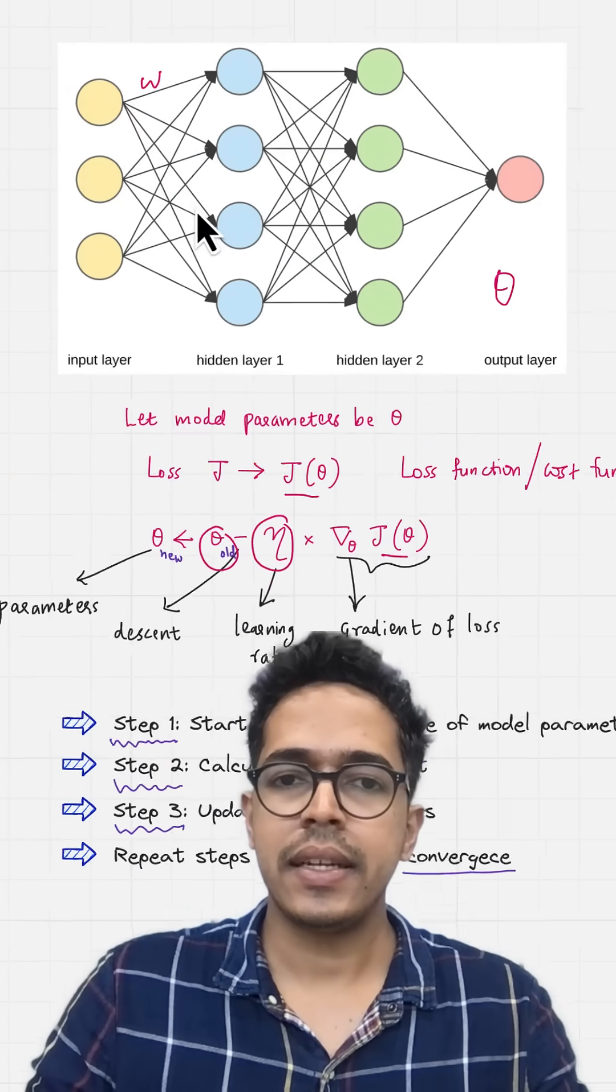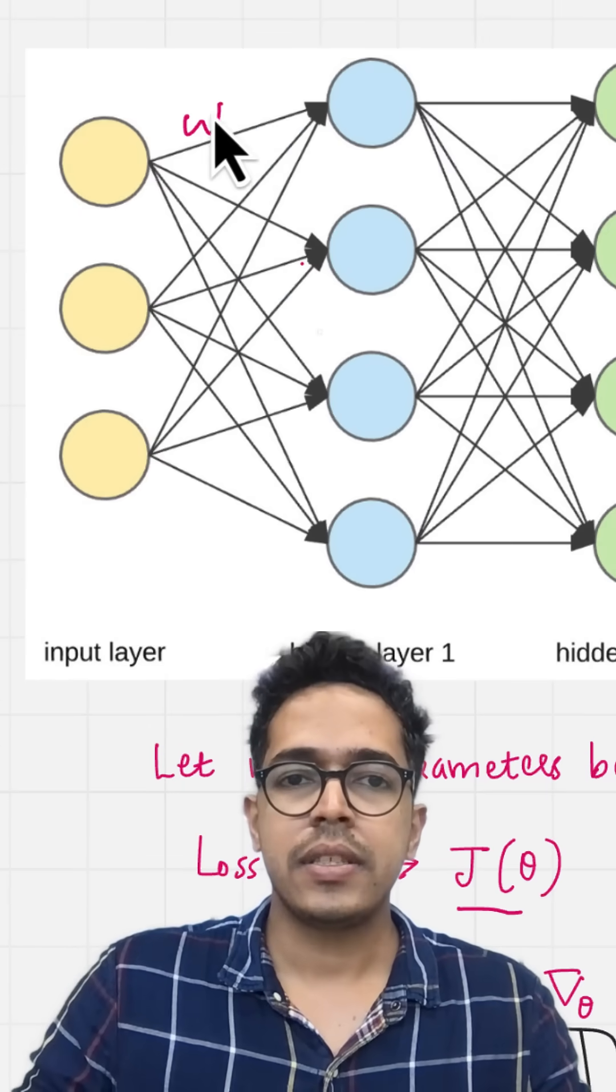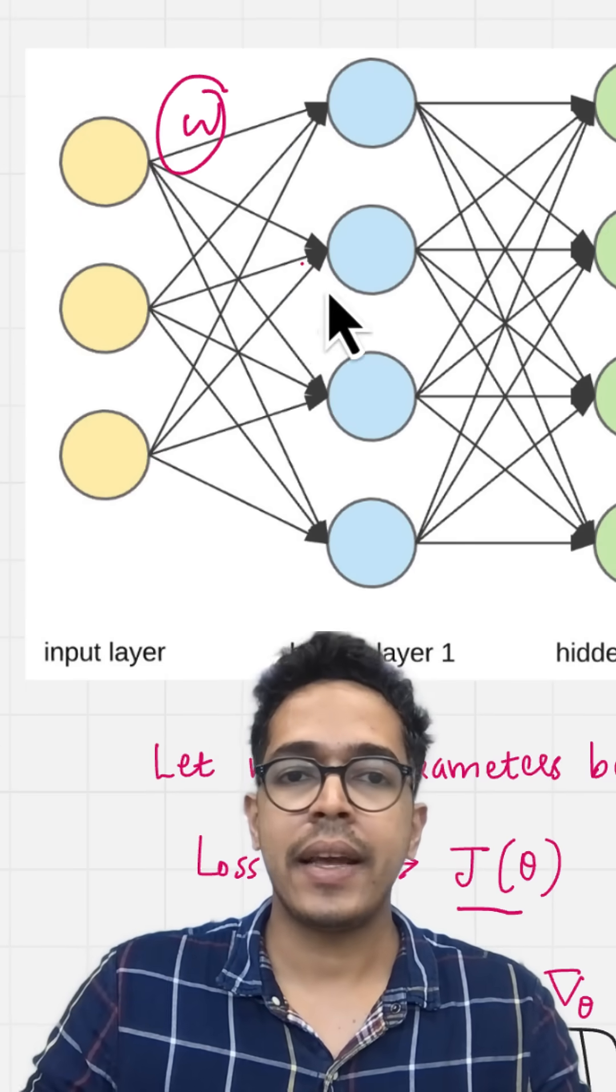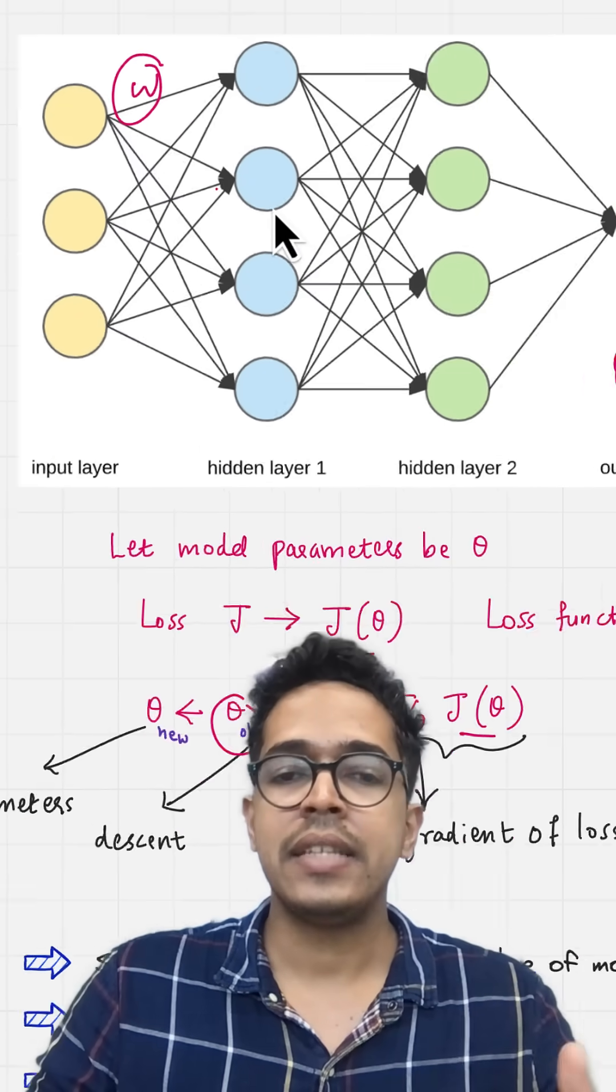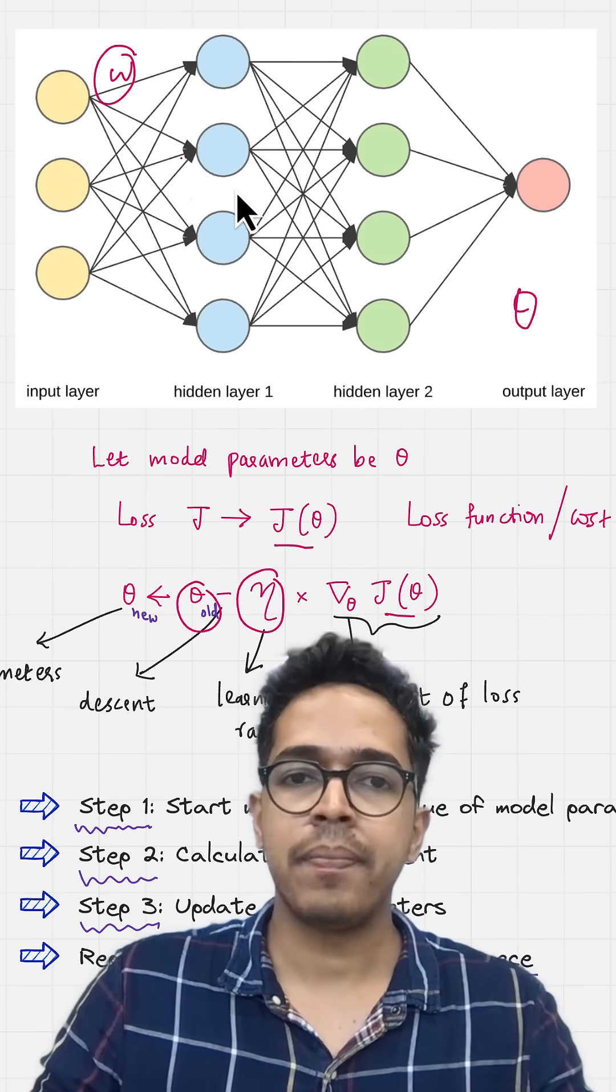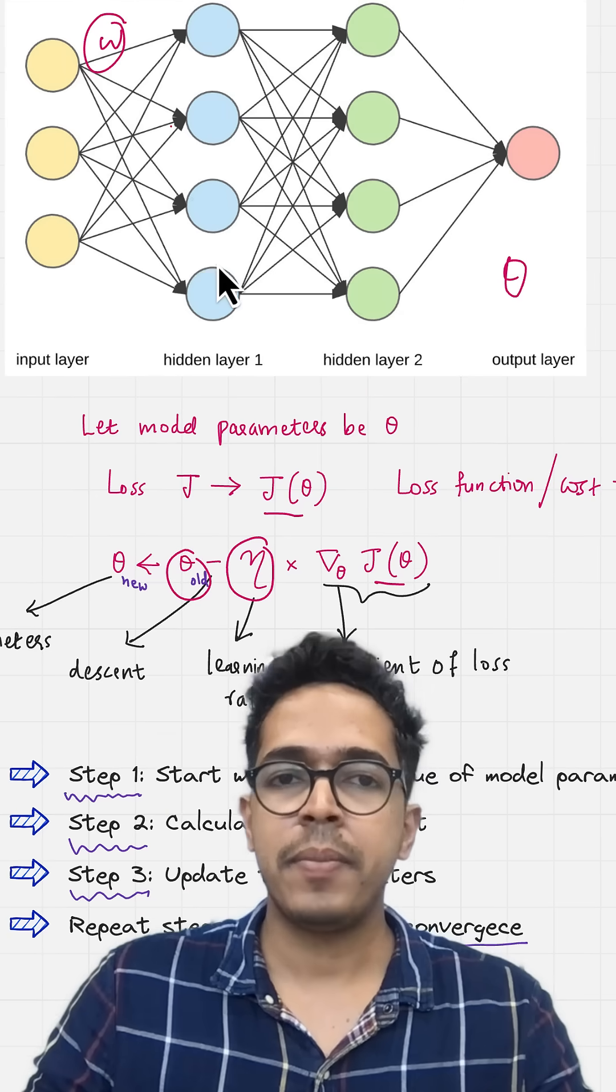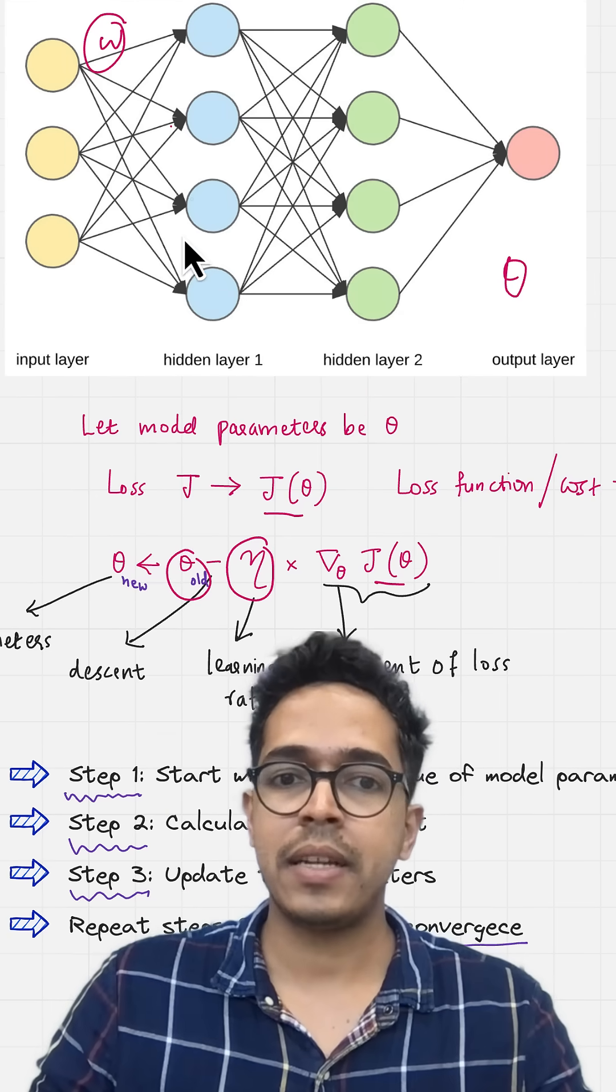Let's try to understand gradient descent in 60 seconds. Neural networks make predictions using parameters like weights and biases. These predictions are initially bad because the initial values are random. The singular goal is to make better predictions by using better weights and biases.